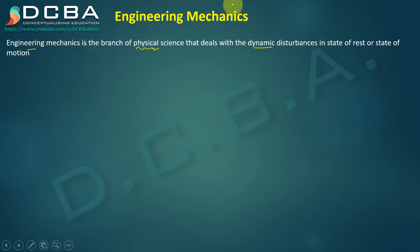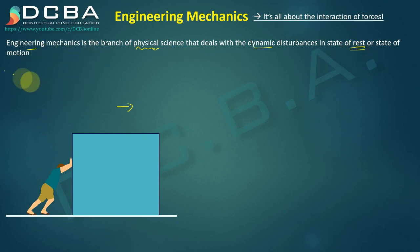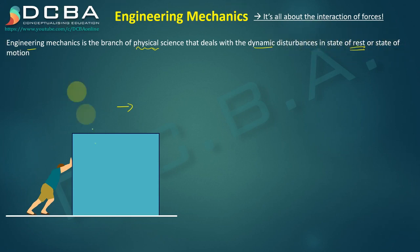In short, engineering mechanics is all about the interaction of forces. Consider a person trying to push something very heavy, wanting it to move, but it is not moving — it is in the state of rest. We are deciphering the definition: it is a physical science dealing with dynamic disturbances and the state of rest or motion. What forces are acting on the body, and what forces are resisting movement?